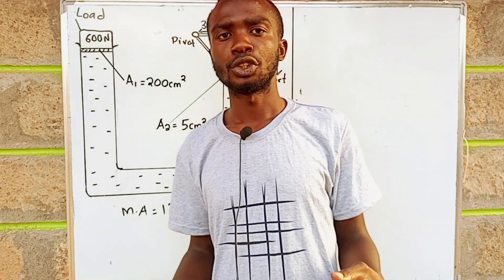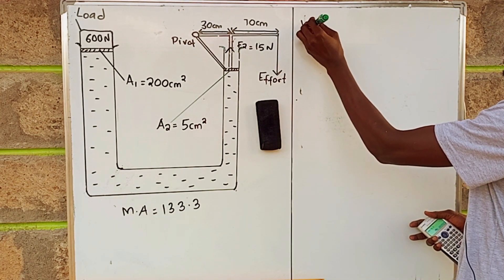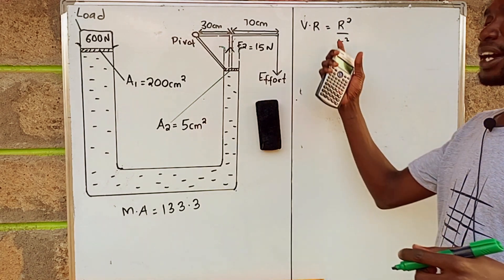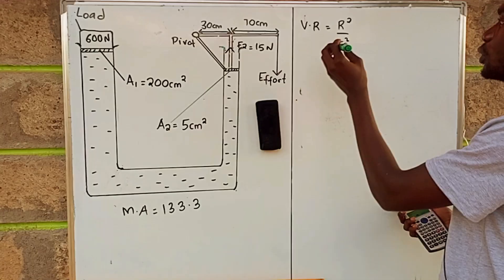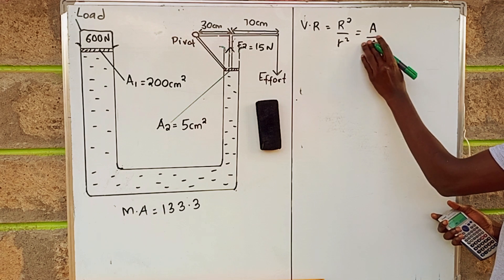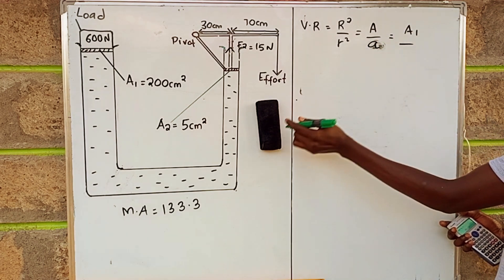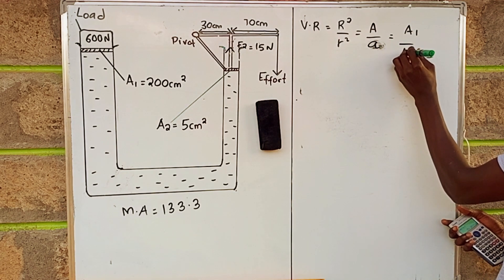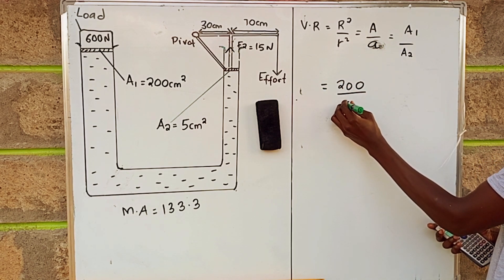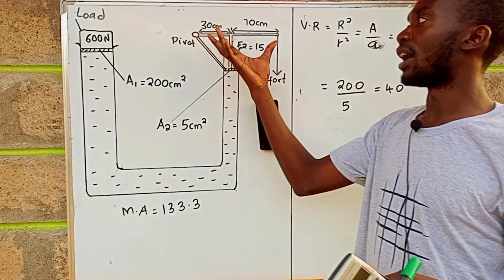Now to obtain the velocity ratio: the velocity ratio of the hydraulic press system is equal to the bigger radius squared over the smaller radius squared, which is equivalent to the bigger area over the smaller area — A1 over A2. So A1 is 200 divided by A2 which is 5, giving a velocity ratio of 40 for the press.